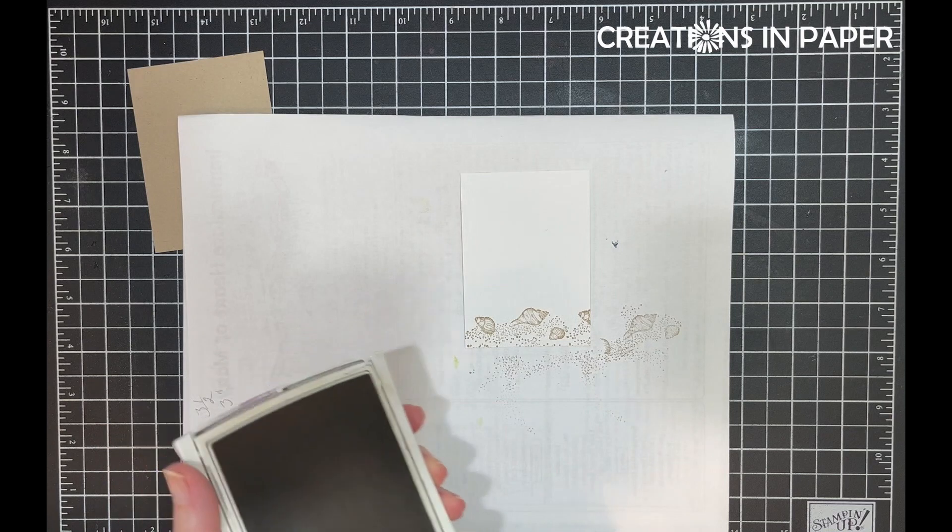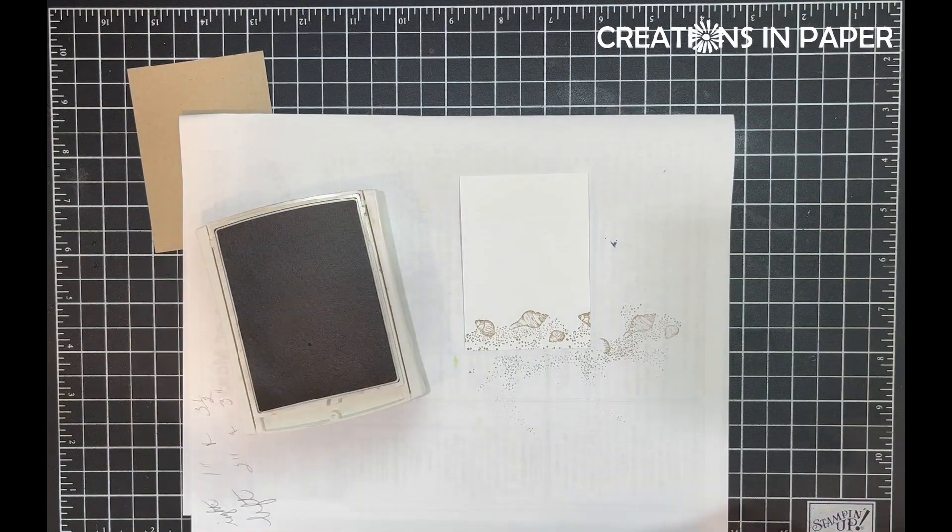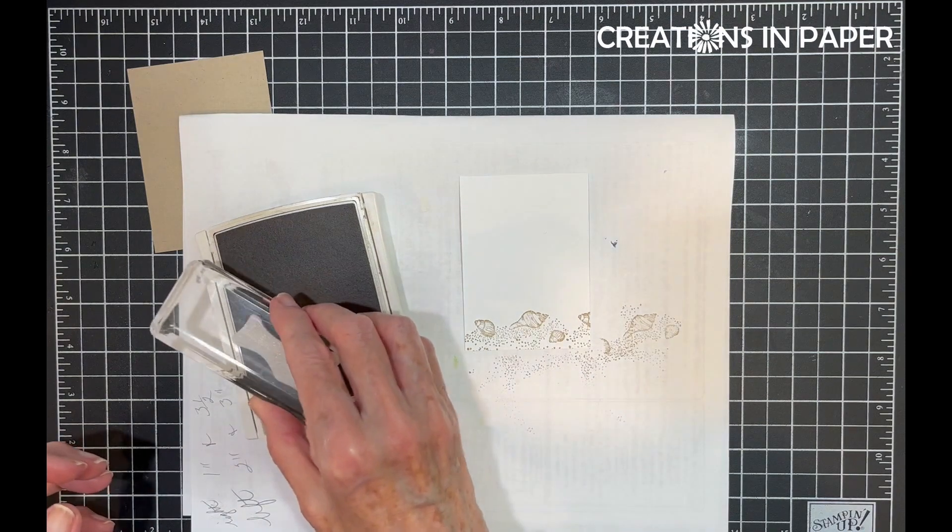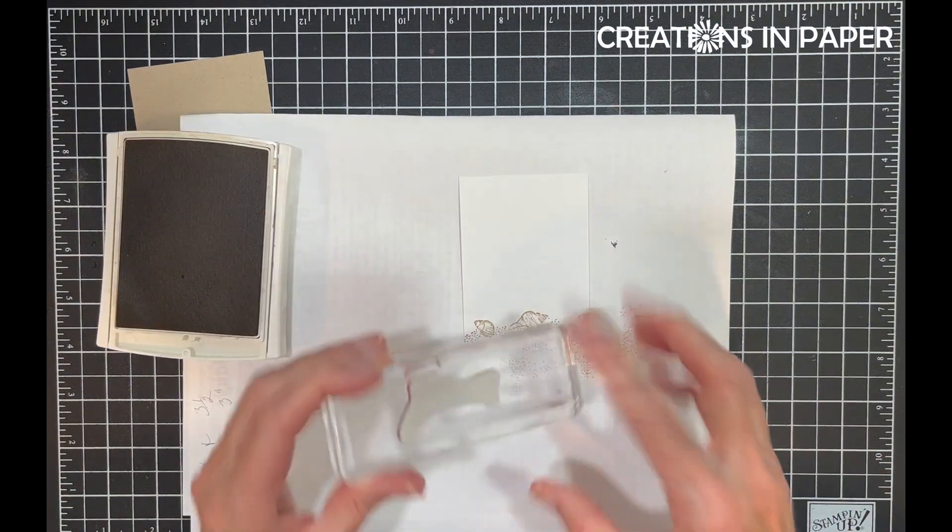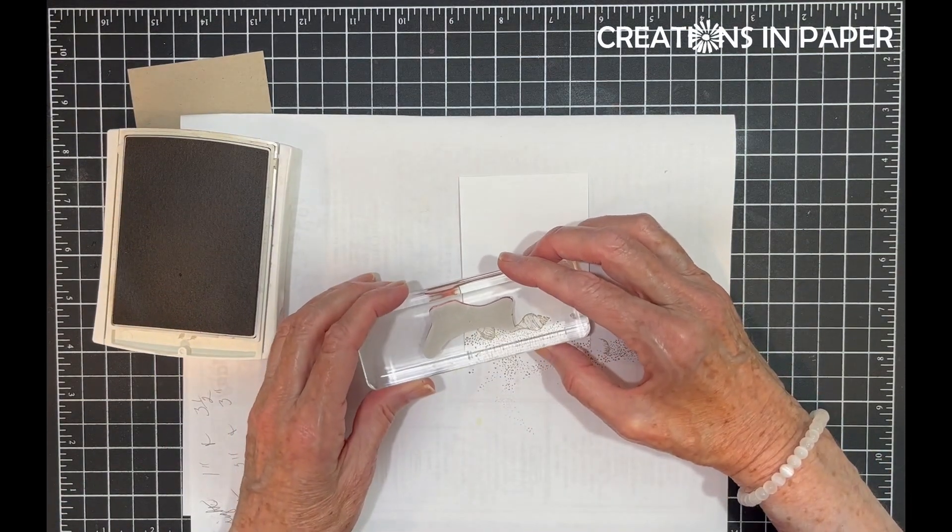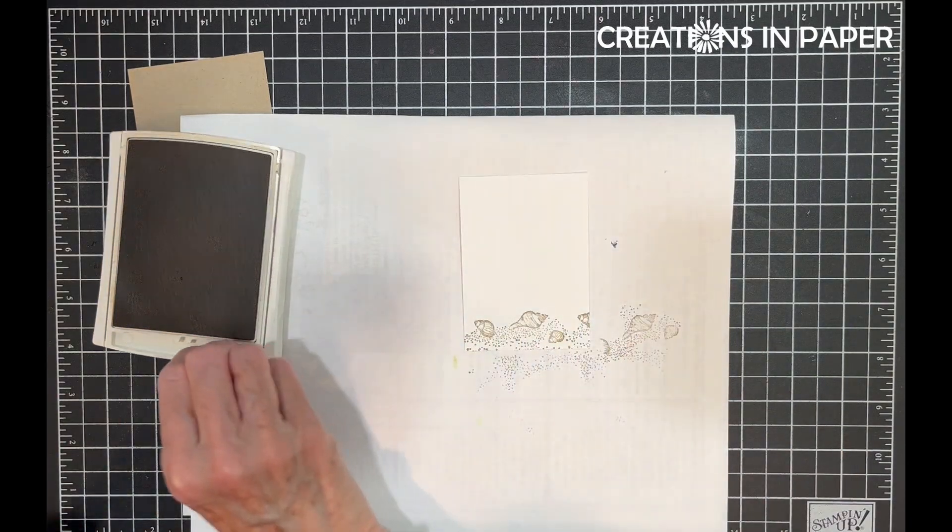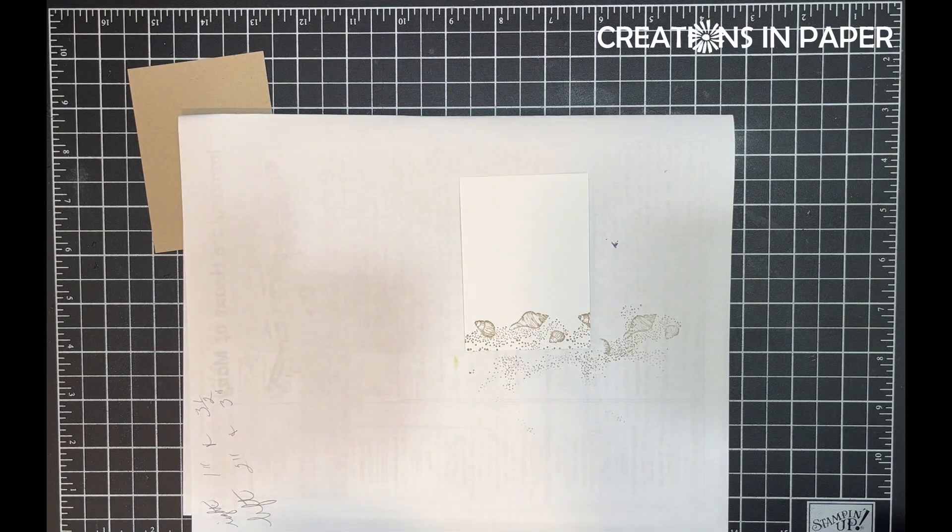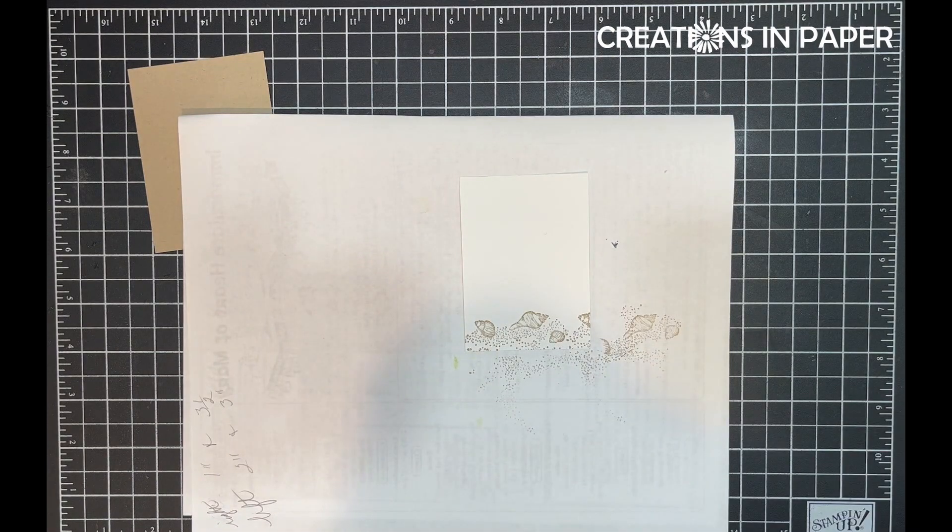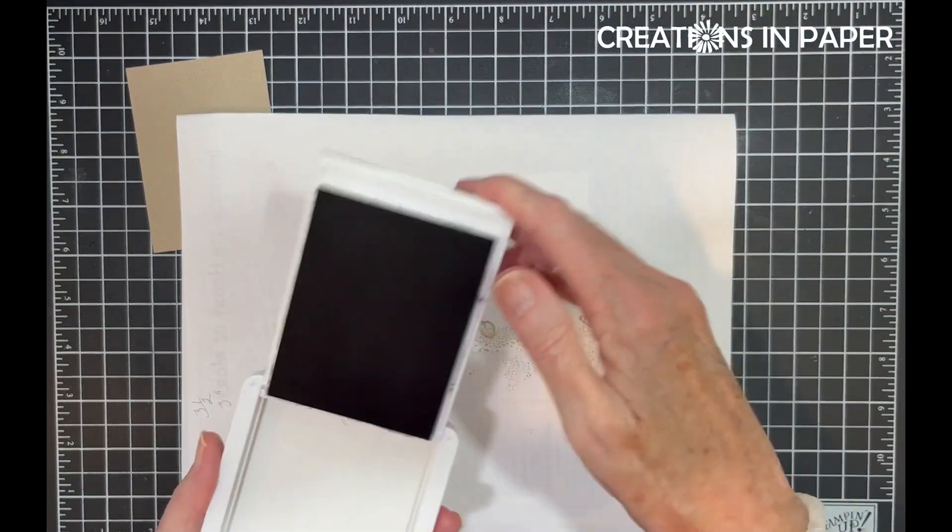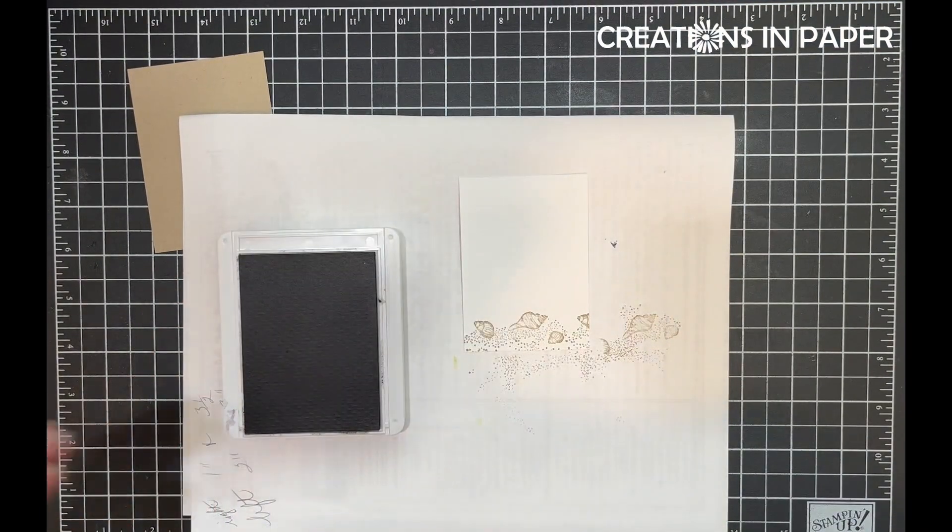You know what, I think I'm going to add some sand to the top of this. Let's see how I do this now. If I go, no it won't work because I have to stamp over top the shells. Never mind, sometimes you have an idea and it just doesn't work. So I'm going to pull in my Gray Granite.